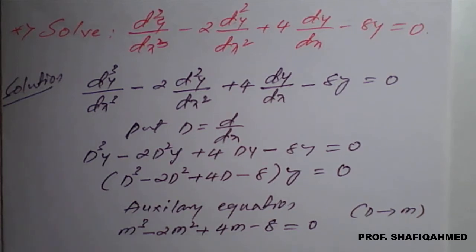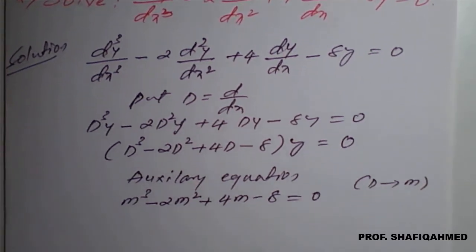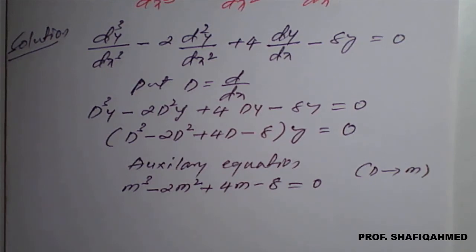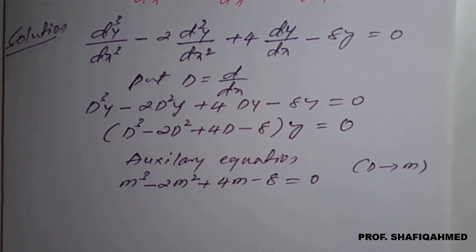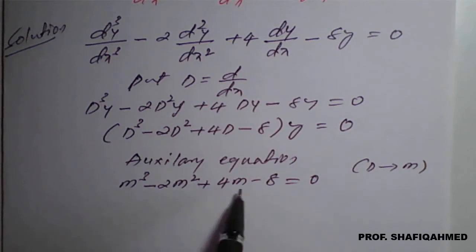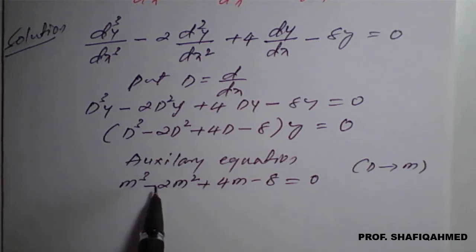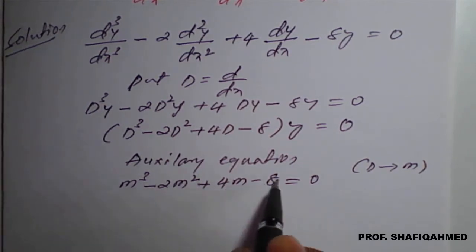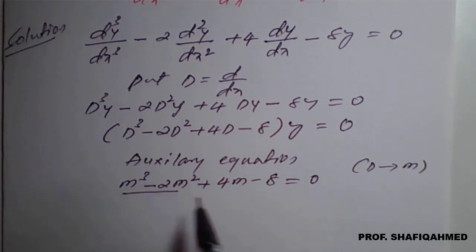This is a cubic equation. I will solve it manually first and show the calculator method later. We have four terms: m³, −2m², +4m, −8. I will group them into two pairs: the first pair (m³ − 2m²) and the second pair (4m − 8).